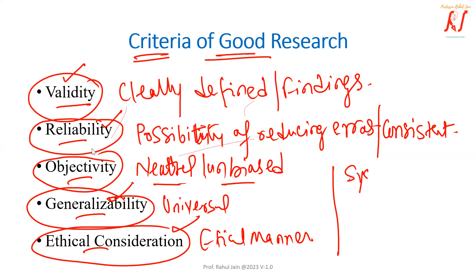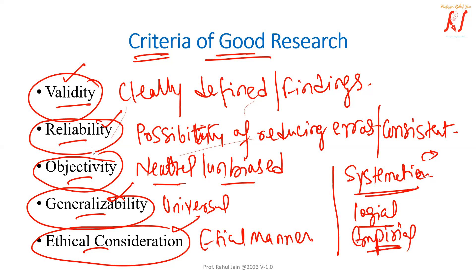Apart from those, your research should be systematic, meaning it should be defined by several steps. Research should also be logical — the process of induction and deduction should be of great value, and rules of logical reasoning should be applied. Your research should be empirical, meaning it should involve one or more real-life situations based on concrete data sets and proofs. Finally, your research should also be replicable, meaning it can be used further in the future by other researchers to make the basis stronger.